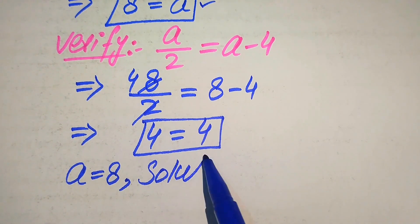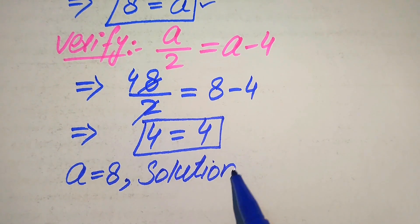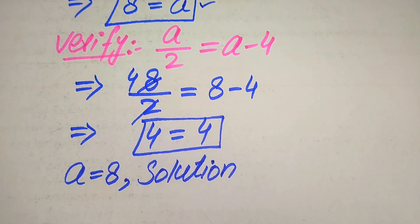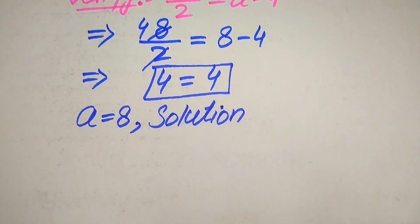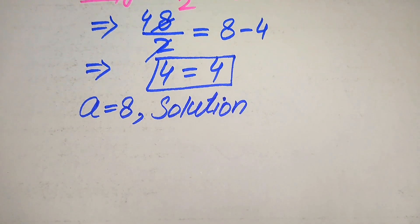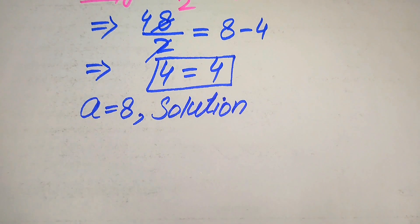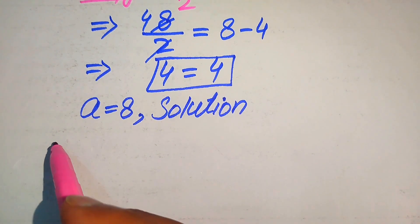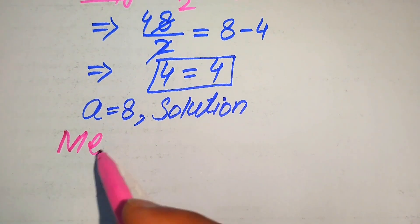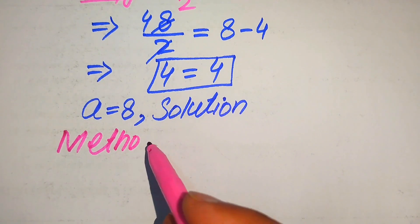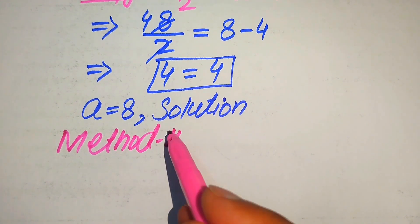We conclude that a equals 8 is the solution of the given equation. The root which cannot satisfy the given equation is called the extraneous root, and the root which satisfies it is called the solution. Here a equals 8 satisfies the equation, so it is the solution. Now we solve this question using the second method.